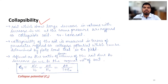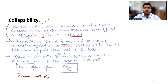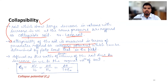Collapsibility refers to soils that show a large decrease in volume with increase in water content at the same pressure — for example, loess soil. Collapsibility is measured by the collapse potential, which can be determined by the plate load test in the field. It is defined as the ratio of the decrease in volume of soil due to increase in water content to the original volume of soil: collapse potential = ΔV / V₀ = Δe / (1 + e₀).